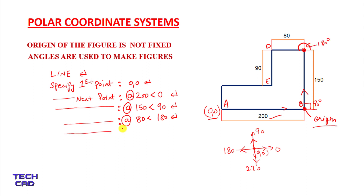Now again it will ask you to specify the next point. Then again add the at-sign — when you put it, D point becomes origin. Now you are going to make the DE line. The DE line angle is like this — the complete angle — so this is 270. And the length of the line is 90. So 270.